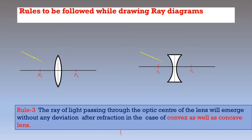Rule 3: the ray of light passing through the optic centre of the lens — that is, the centre of the lens — will emerge without any deviation after refraction, in the case of both convex lens and concave lens.